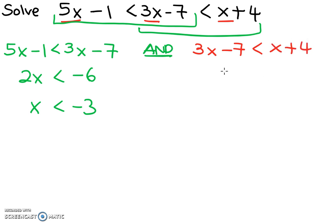bring the x to the left-hand side, 2x less than 4 plus 7, which is 11, so x will be less than 11 over 2.